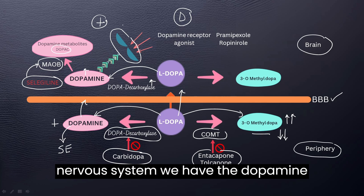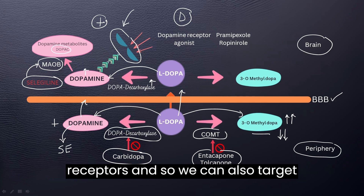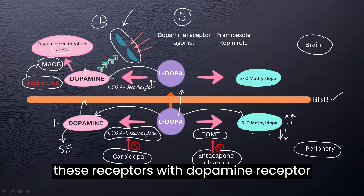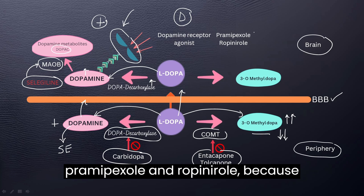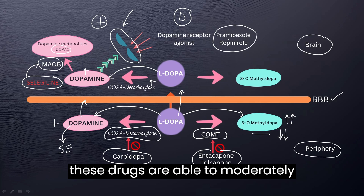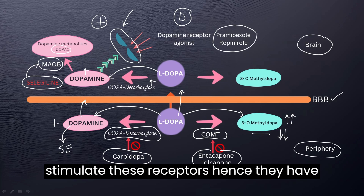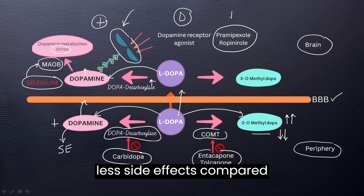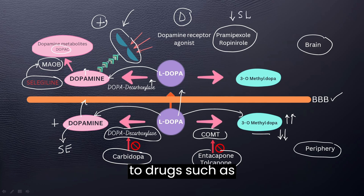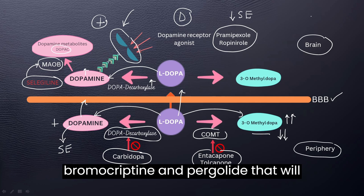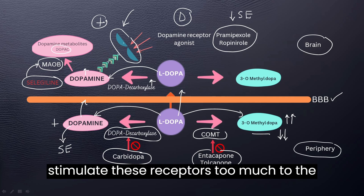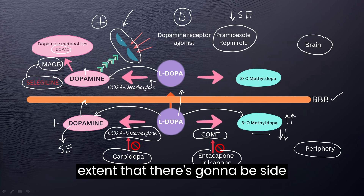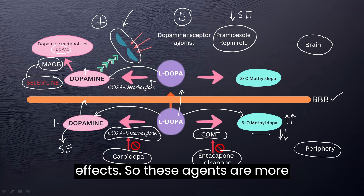In the central nervous system we have dopamine receptors, and so we can also target these receptors with dopamine receptor agonists. Here I want to emphasize pramipexole and ropinirole, because these drugs are able to moderately stimulate these receptors and hence have fewer side effects compared to drugs such as bromocriptine and pergolide, which stimulate these receptors too strongly and cause more side effects. So pramipexole and ropinirole are more preferred.